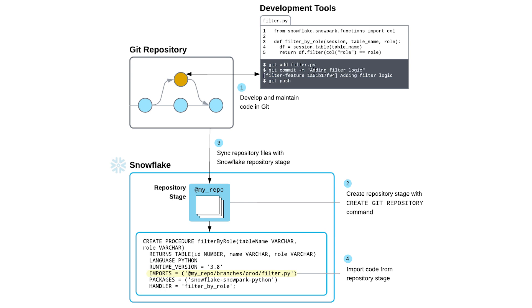Hi everyone, I'm Doris Lee and I'm a product manager at Snowflake. In this video we'll walk you through how you can set up and use git integration to version control your work in Snowflake. With Snowflake's new git integration feature, you can connect your remote git repository with Snowflake so that files from this repo are synced to a special type of stage called the repository stage. The repository stage acts as a local git repository with a full clone of the remote repository, allowing you to work with files in your repo in Snowflake and keep your work in sync with your git repo for better collaboration and version control.